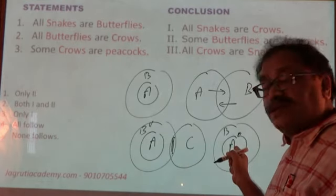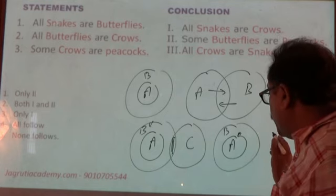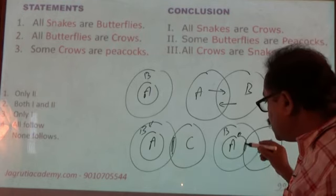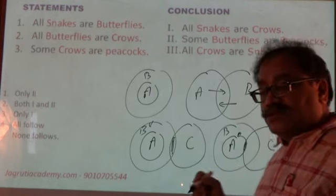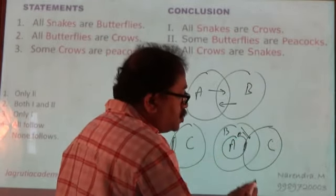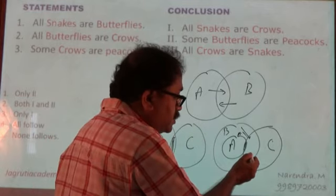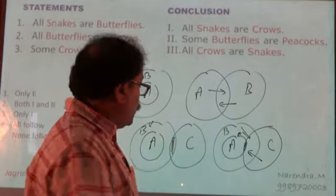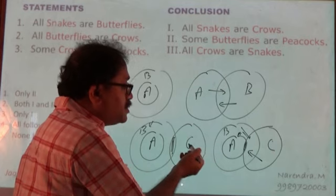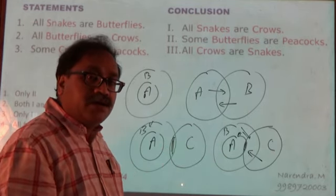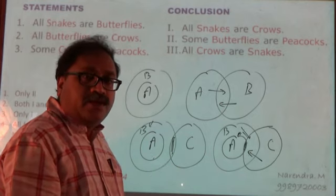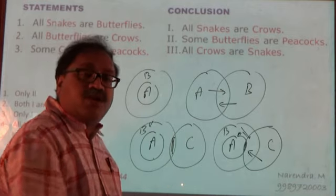But in the second case, some A's are C's. So to make some A's are C's, I need to draw the diagram this way — this is C. Therefore some A's are C's. So in order to make some A's are C's, some B's are C's and some C's are also B's. When it is said some B's are C's, the only thing I can say is some C's are B's. But I cannot say anything between A and C.